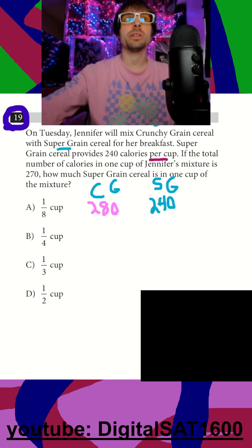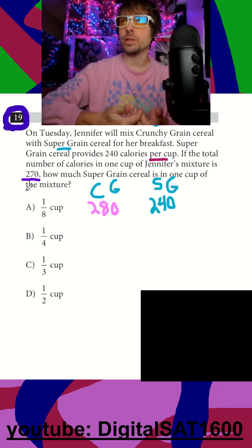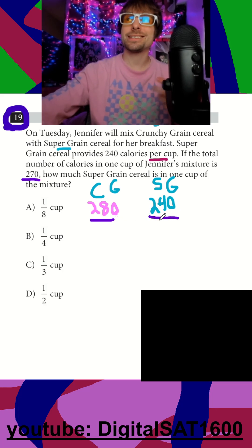So our first goal is complete, all our units match. They say if the total number of calories in one cup is 270, and that should trigger something. I now have three terms with the same units. I have calories, calories. They mix together to make a combination of calories.